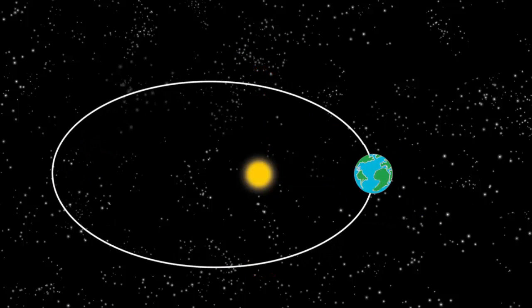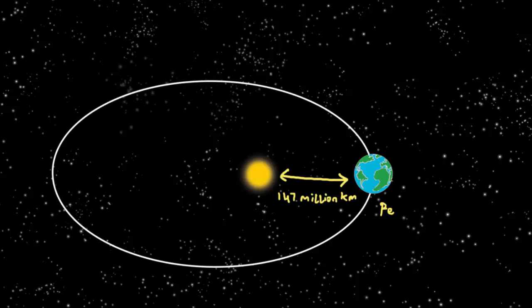Actually, the sun is at one of the two foci of the ellipse and not at the center. The closest point of sun to Earth is called perihelion and the farthest aphelion.